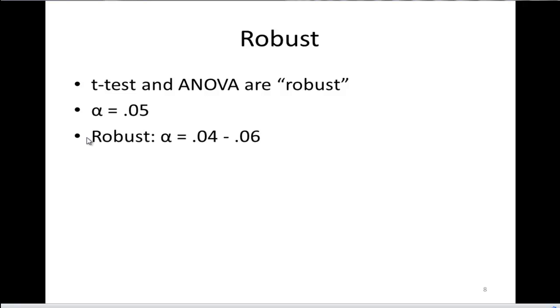People say that statistics are robust across conditions if they keep the per comparison or alpha rate between 0.04 and 0.06. It doesn't have to be exactly 0.05. Somewhere in the 0.04 to 0.06 range is considered a robust statistic. If it blows out beyond that, we start to get concerned that our t-test or ANOVA is not keeping our alpha rate at an appropriate level.